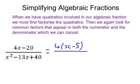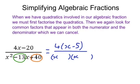To factorise the quadratic, we need two brackets. We're going to have x at the front of both of those, and then we're looking for numbers that multiply to make plus 40 and add to make minus 13. Because they multiply to make a positive number, they both have to be the same sign, and because they add to give a negative number, they both have to be negative. The numbers that add to give 13 and multiply to give 40 are 5 and 8.